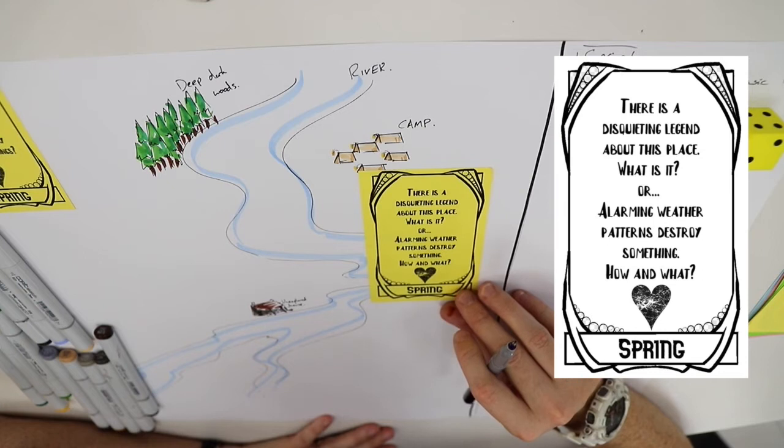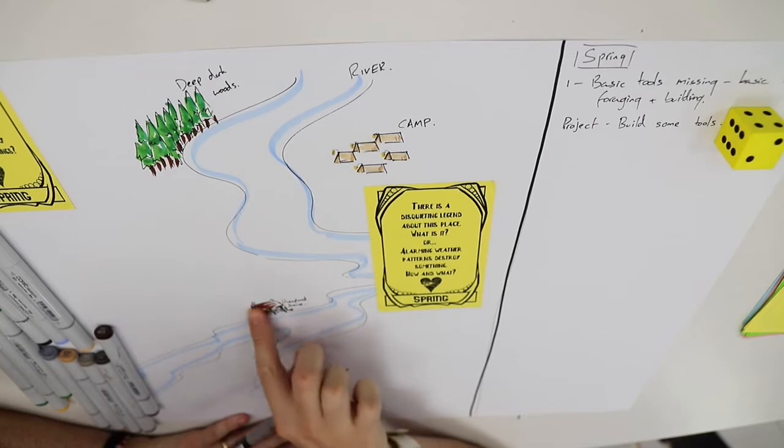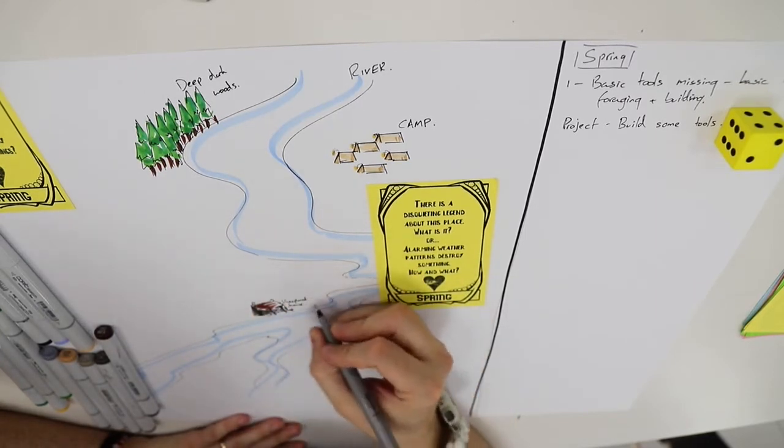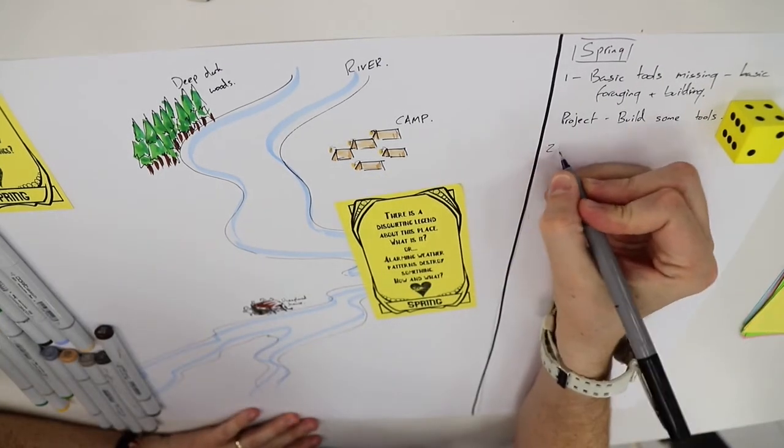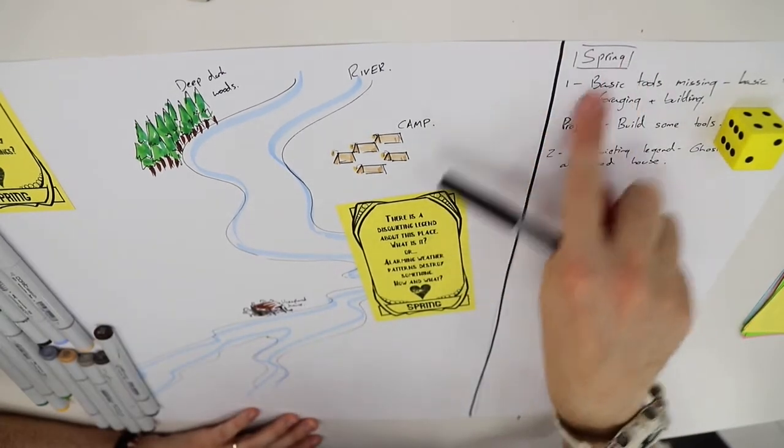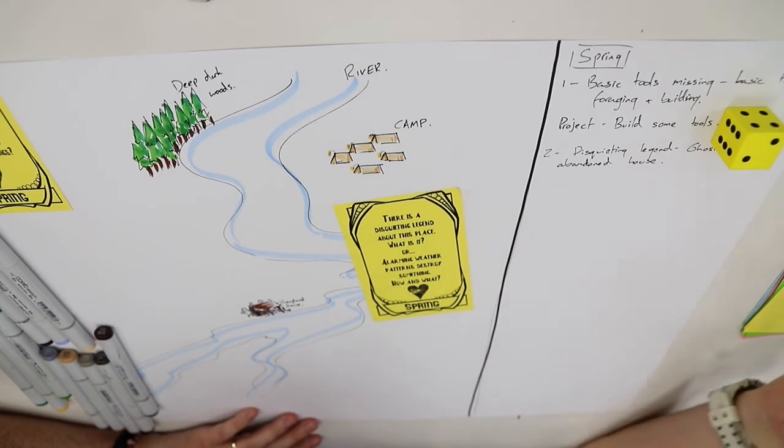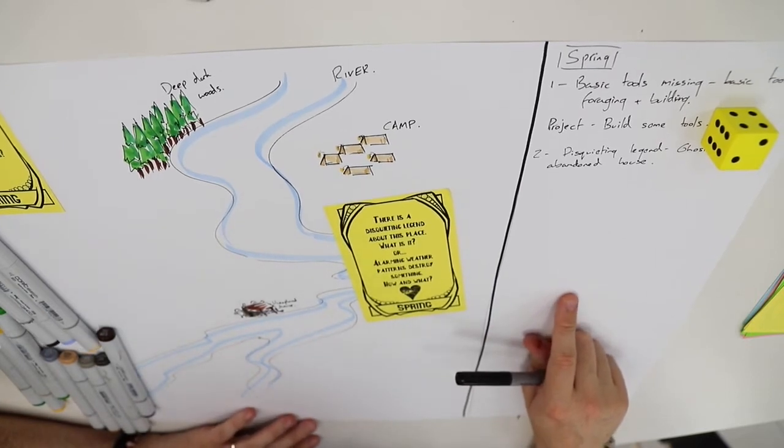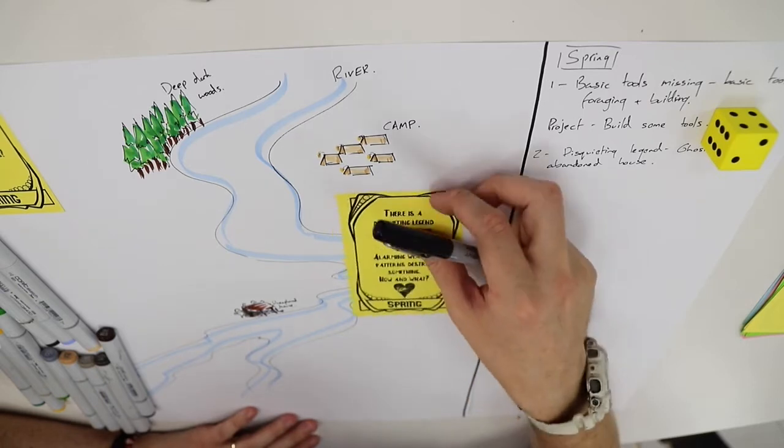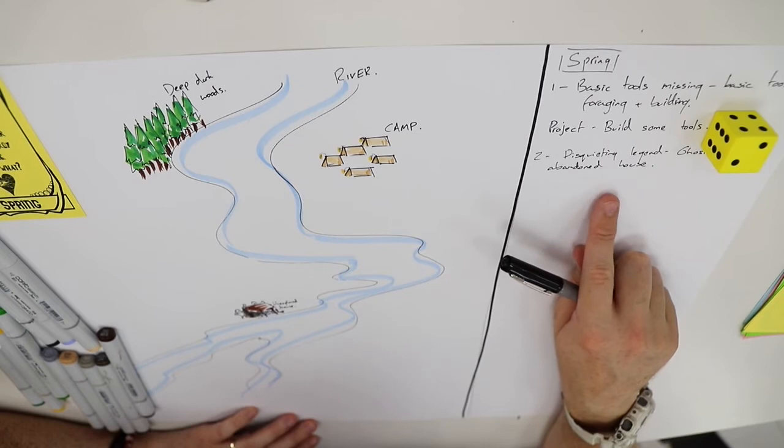Next card: "There's a disquieting legend about this place. What is it? Or an alarming weather pattern destroys something." The legend is that there are ghosts in the local unexplored house. I'm going to indicate this on the map with a really terrible rendition of a ghost and then make a note of it over here. The reason I think it's important to make a note of this as you go through is because narratively, if you have to step away from the game and come back, it provides you or your group an opportunity to read through and see what's happened. It also provides a little bit of context for what has happened to the community as you've gone through your quiet year.